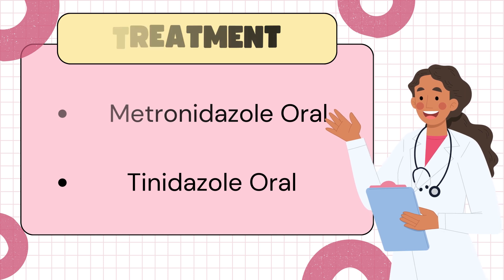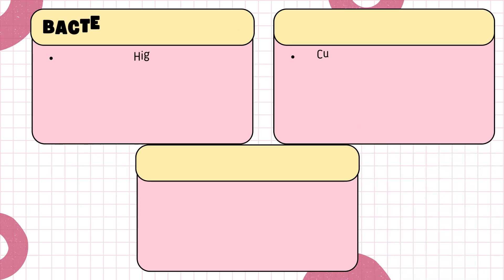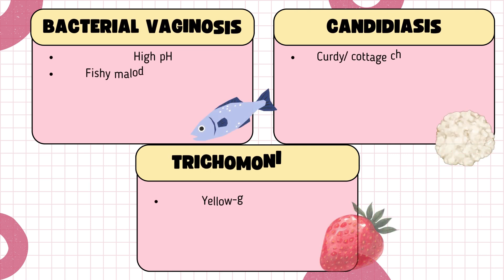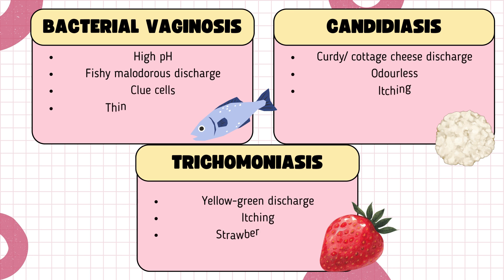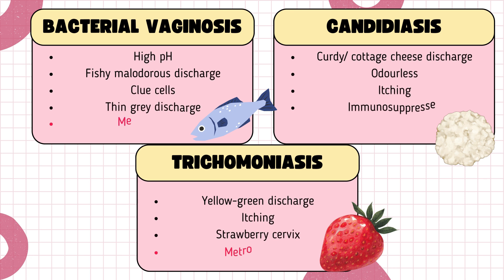So that's a wrap on genitourinary tract infections in females. For those studying for exams, here are the high-yield points to remember: for bacterial vaginosis, look out for thin grayish discharge with a fishy odor; for candidiasis, remember cottage cheese-like discharge and its association with immunosuppressed patients; for trichomoniasis, note the sexual history, strawberry cervix, and the very characteristic yellow-green frothy discharge.